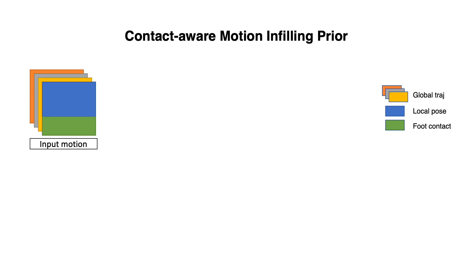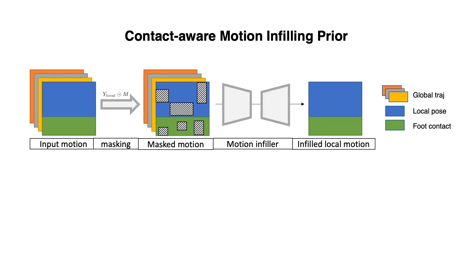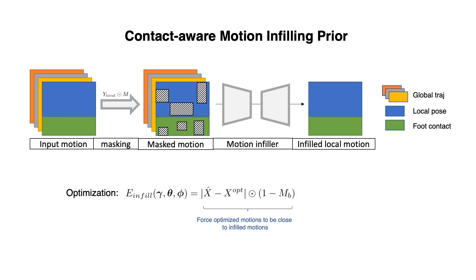For the motion infilling prior, the input motion sequence is represented as three parts: the local body pose, foot-ground contact states, and the global trajectory represented by rotational and translational velocities. The input motion sequence is masked by occlusion masks from PROX, and the infiller reconstructs the local motion and foot contact states. During optimization, the pre-trained infilling model first predicts occluded motions X-hat as pseudo-ground truth, and we minimize the distance between X-hat and the current body markers of the occluded body parts X-opt, to force the body to be close to the inferred natural motions. Here M_B is the mask for occluded body markers.